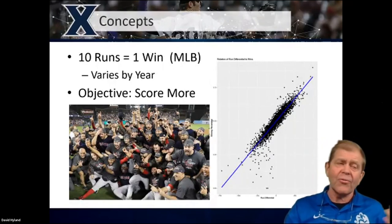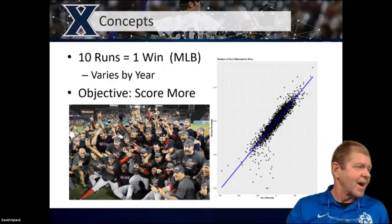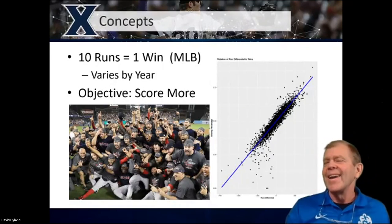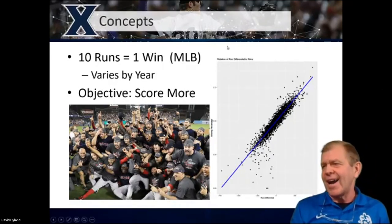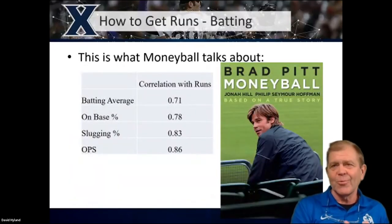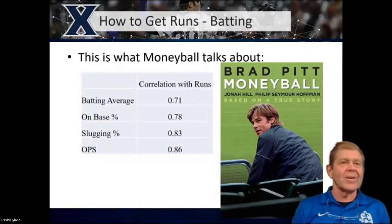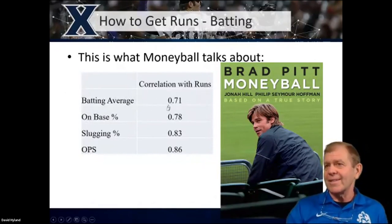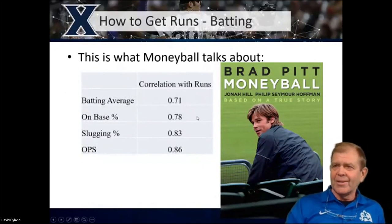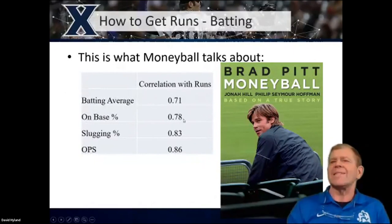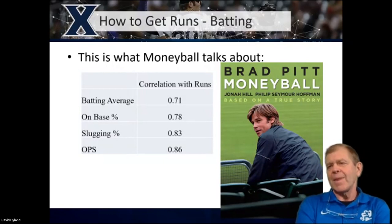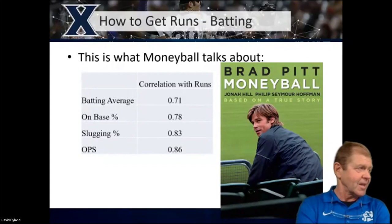For our purpose, the objective is obviously to score more runs. So the next question is: how do we score more runs? We look at what statistics are correlated with runs. The big Moneyball observation is that Billy Bean felt players with higher on base percentage were less expensive. On base percentage is more correlated with runs than batting average; slugging even more; OPS more. We could look at things like wOBA even more.